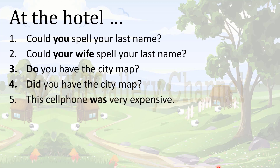Consider 'This cell phone was very expensive.' The use of 'was' shows that the phone is an old version. It was very expensive when it was issued, but now after five years it's not expensive anymore. So the addresser wants to say that this cell phone was a good type when it was issued, but now it is no longer good.